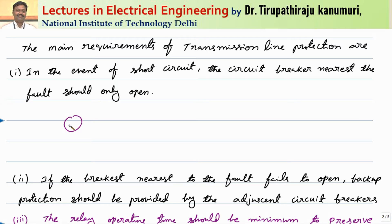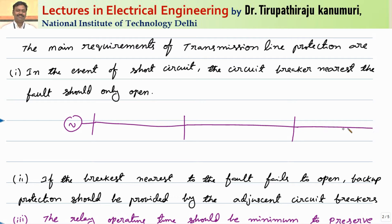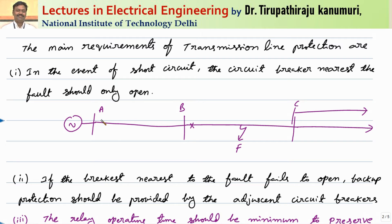Let us take a singly fed system — there is an alternator or generating station. There may be some parallel feeders at some places, represented by points A, B, C. Let us assume a fault has happened at a point. Whenever the fault happens, I want my circuit breaker at point B to operate first, so that the other part of the system is not disconnected and the stability of the system is not affected.